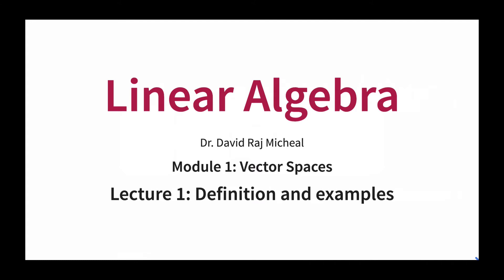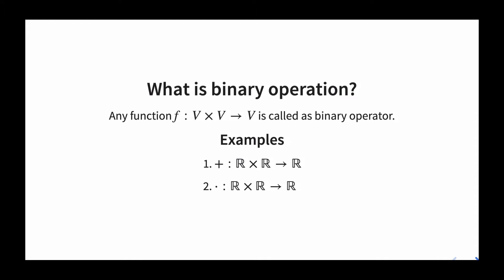Before jumping into the definition of a vector space, we will see what is a binary operation. A binary operation is a function from V×V to V itself, which means you take any two elements in a set V, perform an operation, and the output is also an element of V. For example, take two real numbers and add them — addition of two real numbers is another real number, so addition is a binary operation.